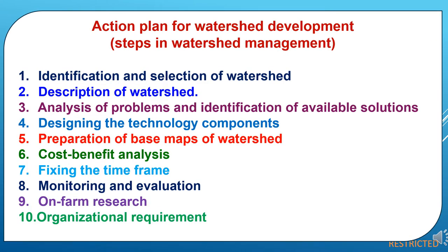For watershed development there should be a proper action plan. The steps in watershed management to be followed are: first, identification and selection of watershed; second, description of watershed; third, analysis of problems and identification of available solutions; fourth, designing the technology components; fifth, preparation of base maps of watershed; sixth, cost-benefit analysis; seventh, fixing the timeframe; eighth, monitoring and evaluation on a periodical basis; ninth, on-farm research; and tenth, organizational requirements.